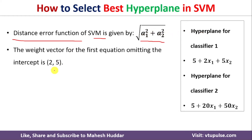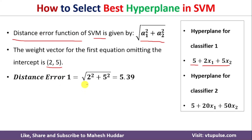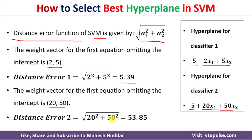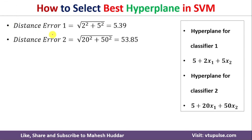Now we will consider the first hyperplane. As I said, I should not consider the intercept — I should consider only the coefficients of the variables. The coefficient of the first variable is 2 and the coefficient of the second variable is 5. So the distance error for the first hyperplane is square root of 2 squared plus 5 squared, which is equivalent to 5.39. Similarly, for the second hyperplane, I need to consider only the coefficients 20 and 50. The distance is square root of 20 squared plus 50 squared, which is equivalent to 53.85.